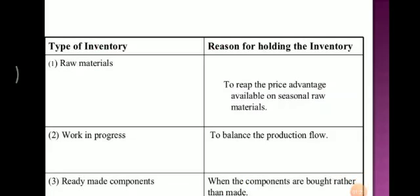Types of inventory. First, raw materials to reap the price advantage available on seasonal raw materials. Second, work in process to balance the production flow. Third, ready-made components when the components are bought rather than made.